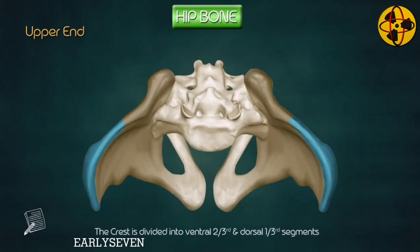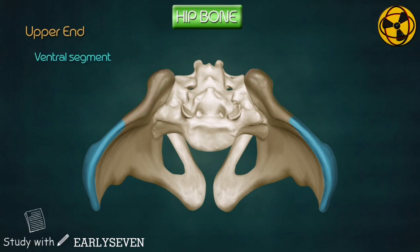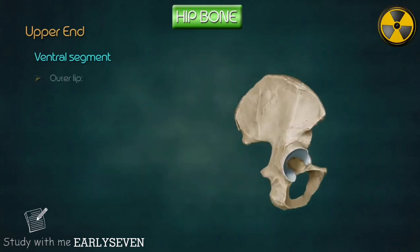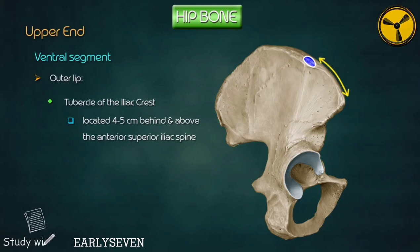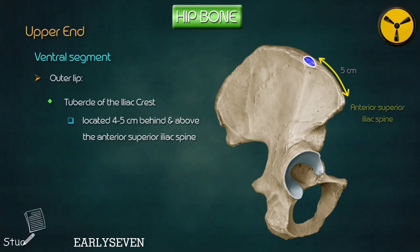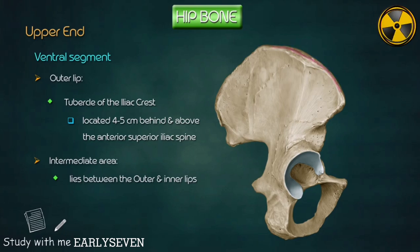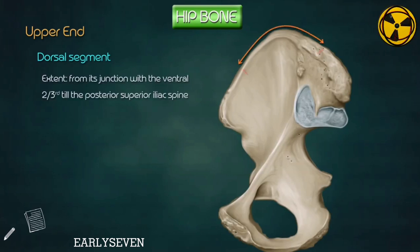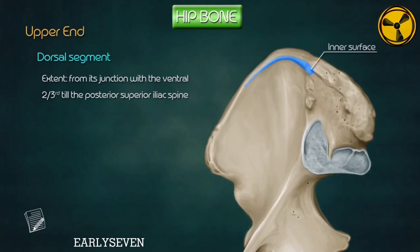The crest is divided into ventral two-thirds and dorsal one-third segments. The ventral segment presents with an outer lip, inner lip, and an intermediate segment. The outer lip presents with a tubercle about five centimeters behind and above the anterior superior iliac spine, known as the tubercle of the iliac crest. The intermediate area lies between the outer and inner lips. The dorsal segment extends from its junction with the ventral two-thirds till the posterior superior iliac spine, and presents an inner and outer surface separated by a ridge.